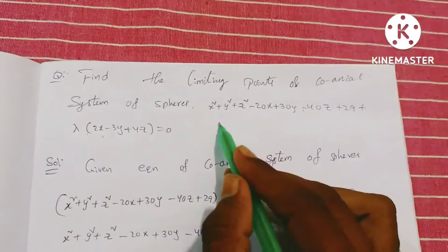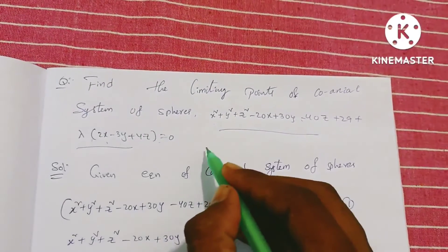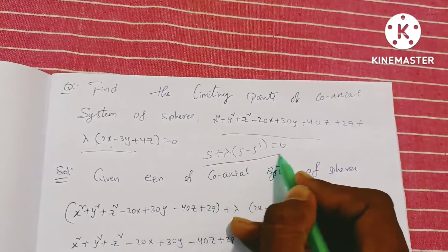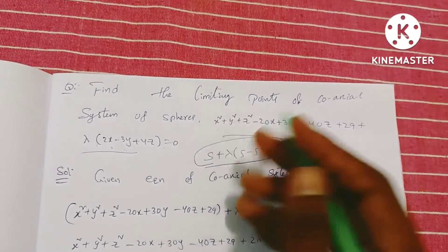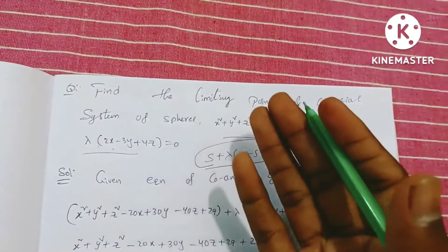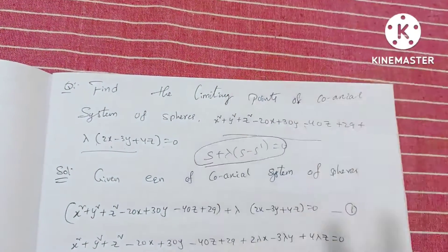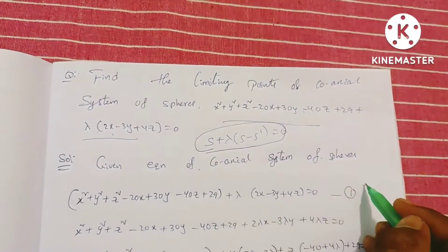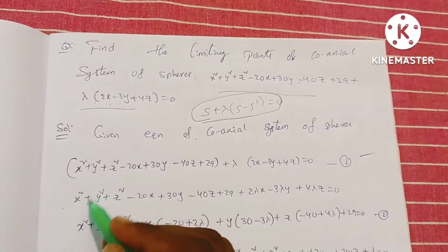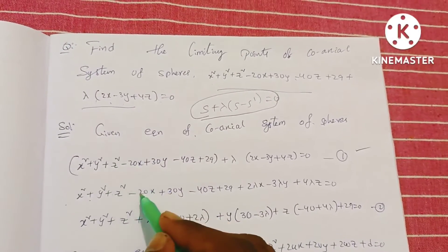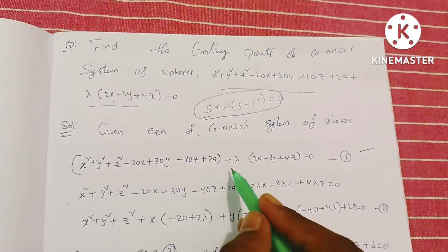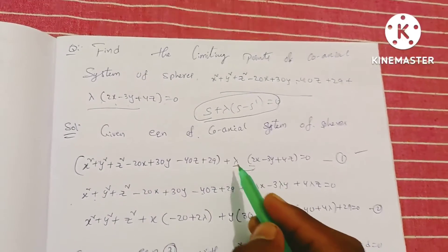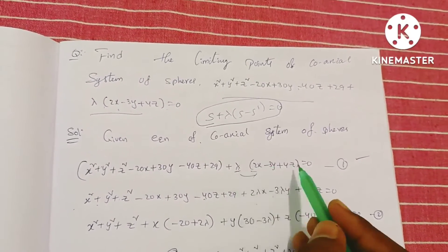This equation is of the form S + λ(S − S') = 0. We need to find the limiting points of the coaxial system. Expanding, x² + y² + z² − 20x + 30y − 40z + 29 + 2λx − 3λy + 4λz = 0.